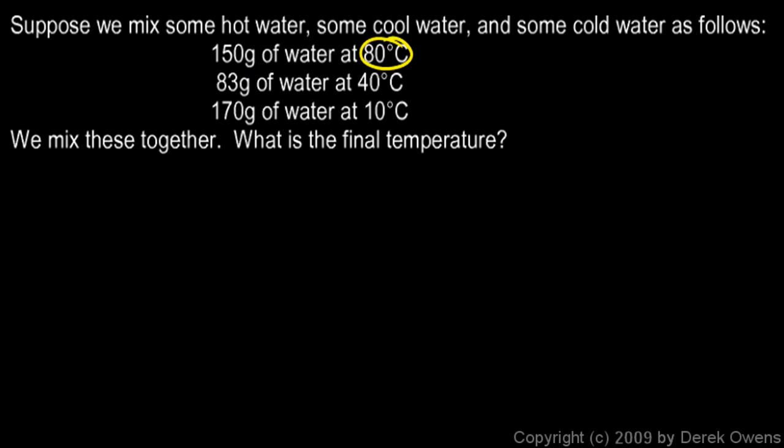150 grams of water at 80 degrees Celsius, that's the hot water, 83 grams at 40 degrees Celsius, and then 170 grams at 10 degrees Celsius, that's the cold water. We mix those together, what's the final temperature?